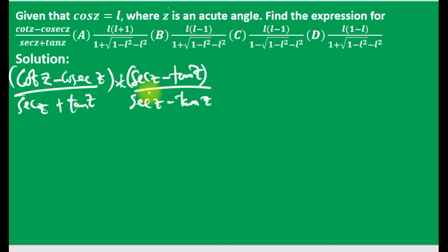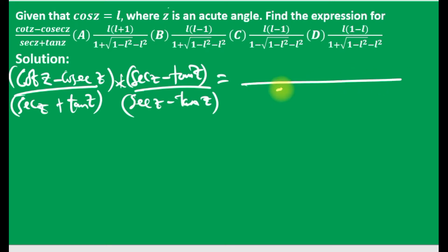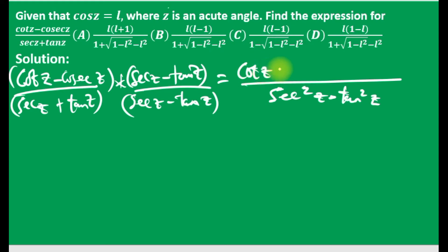This is rationalization so that we simplify. The denominator is a difference of two squares — sec squared z minus tan squared z. We'll open up the numerator, which gives us cos z times the quantity sec z minus tan z.